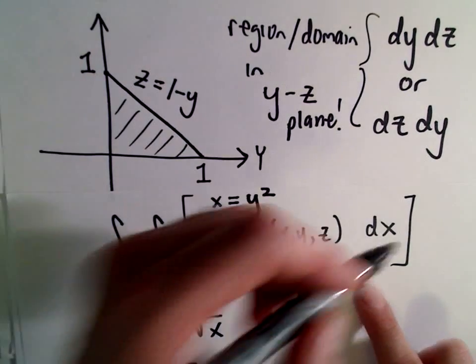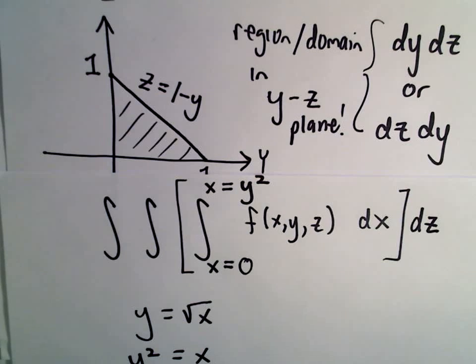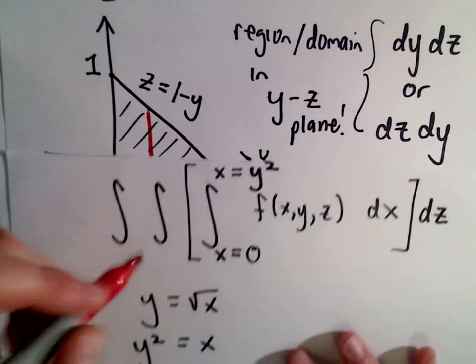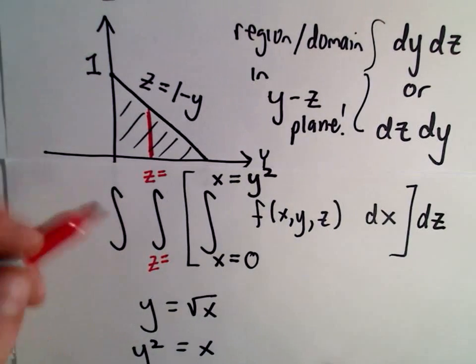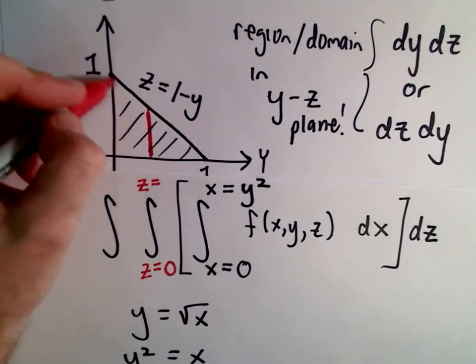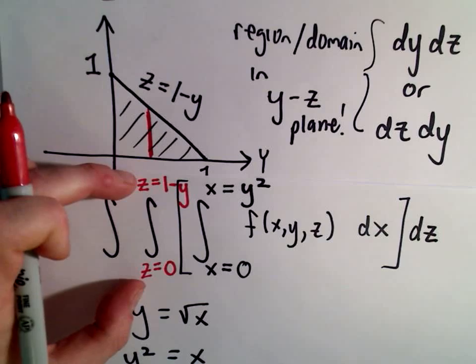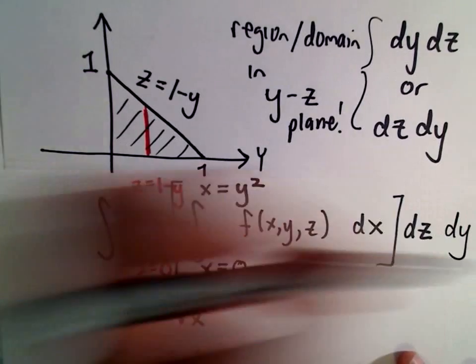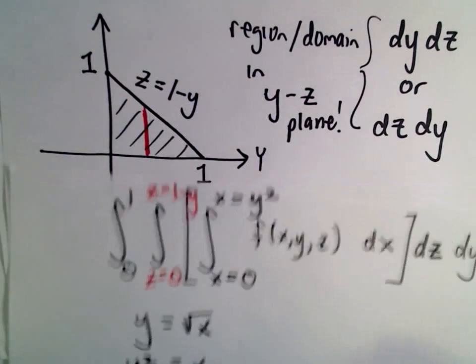If I integrate with respect to z, I'm going to draw my line parallel to the z-axis. My limits of integration are going to be of the form z equals some curve and z equals some curve. The lower curve would simply be z equals zero. The upper curve would be z equals one minus y. Those will be my inside limits of integration. And then if we integrate with respect to y at the end, I would think, what's the smallest y coordinate? It's zero to the largest y coordinate, which is one.